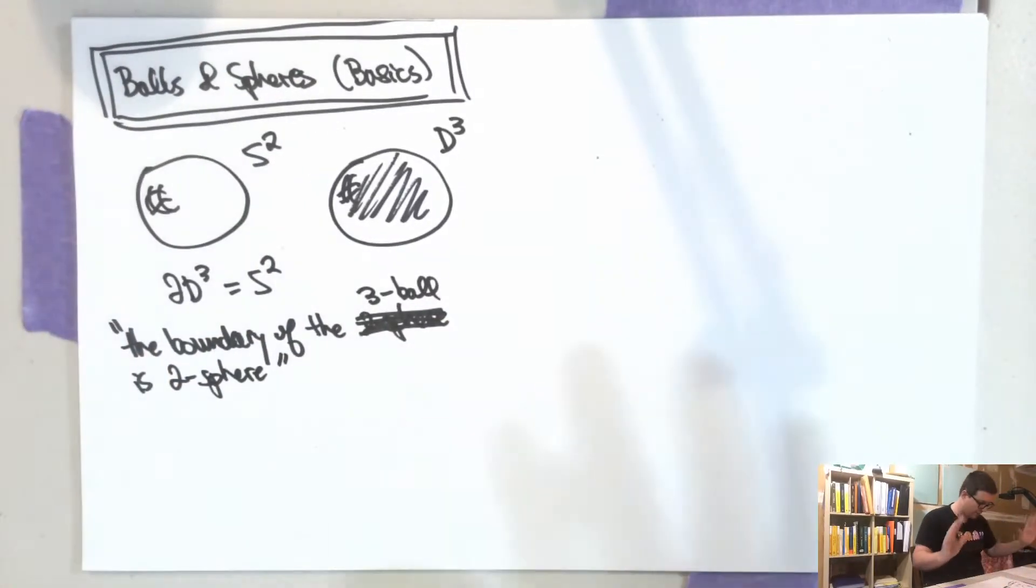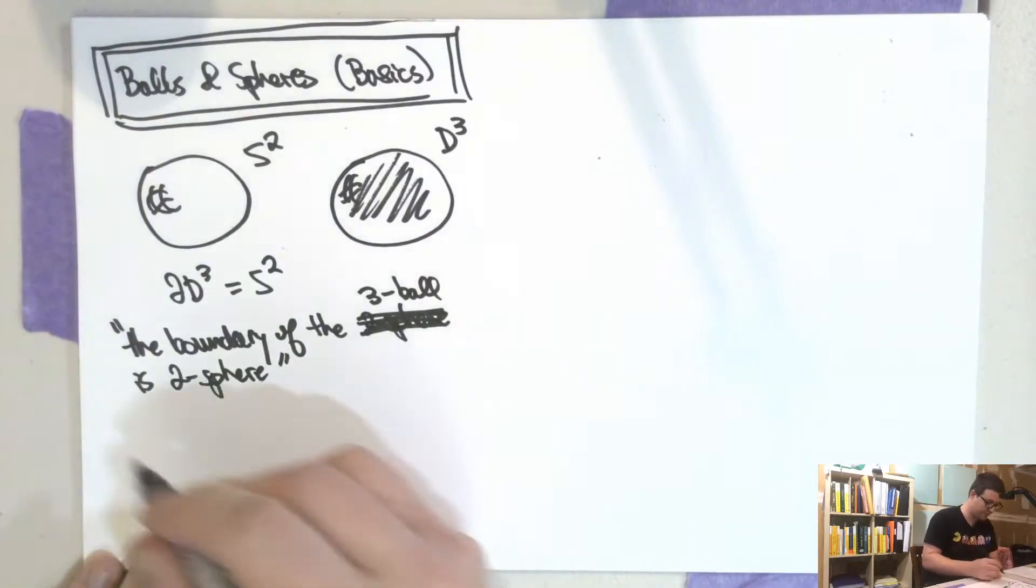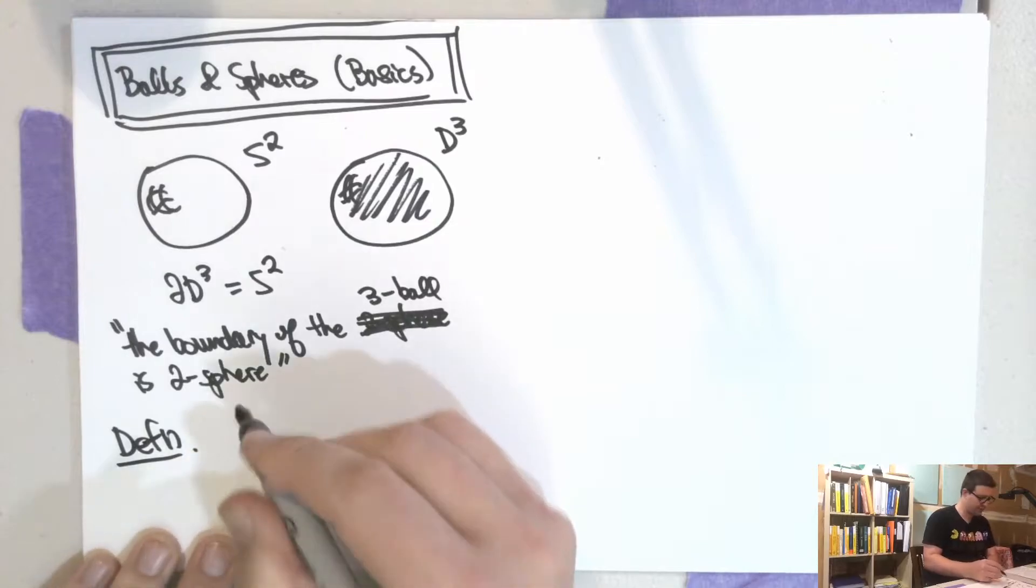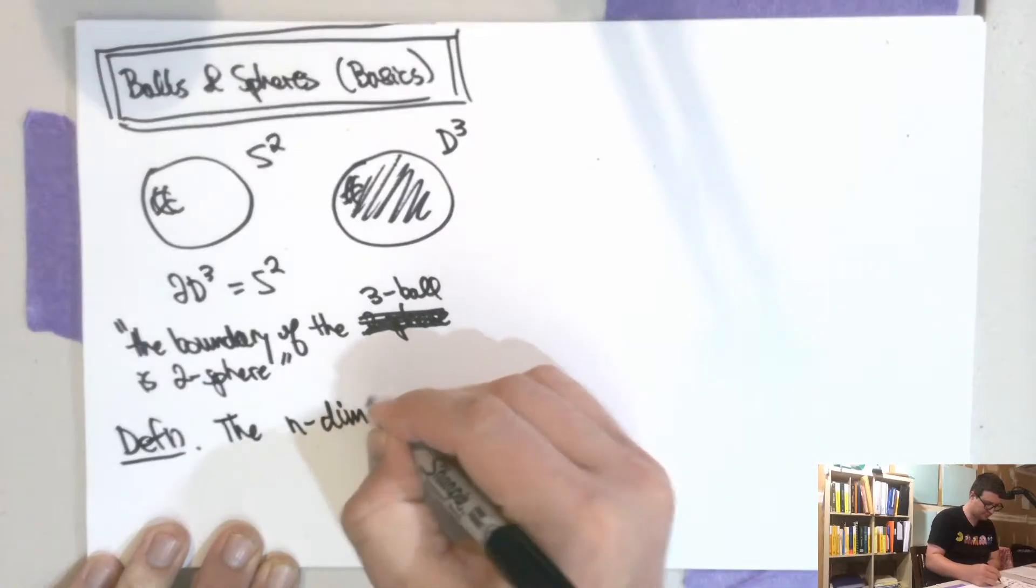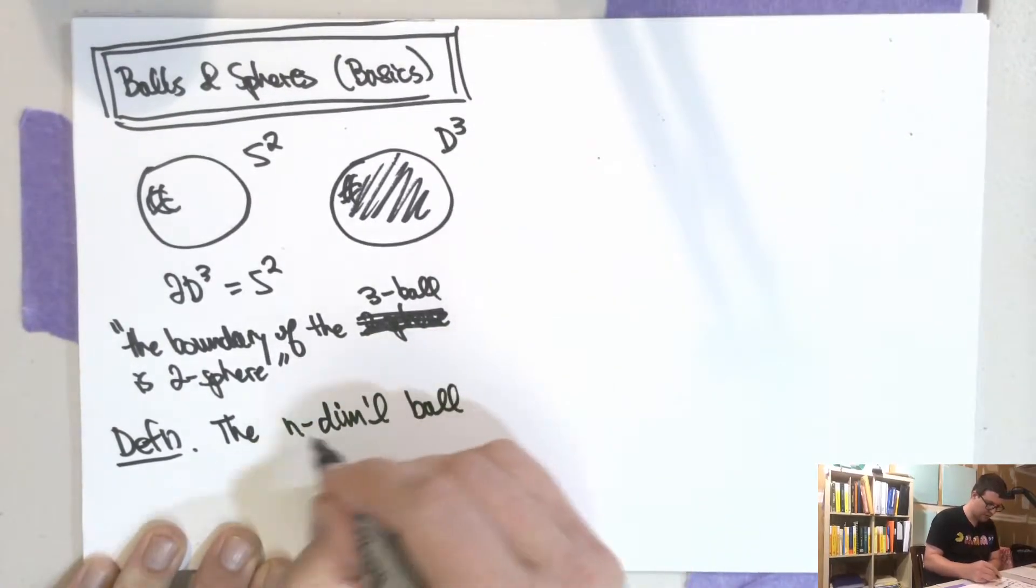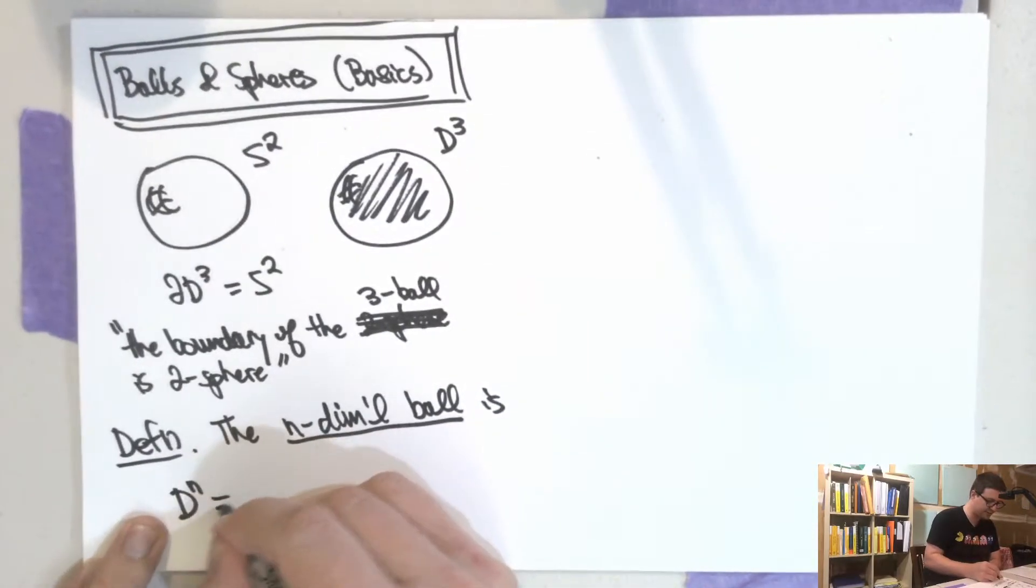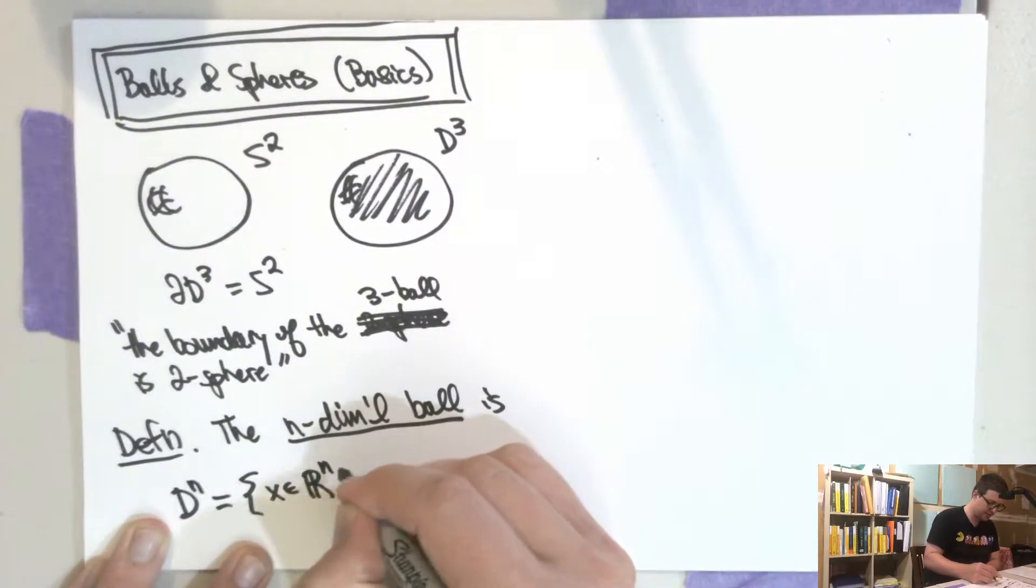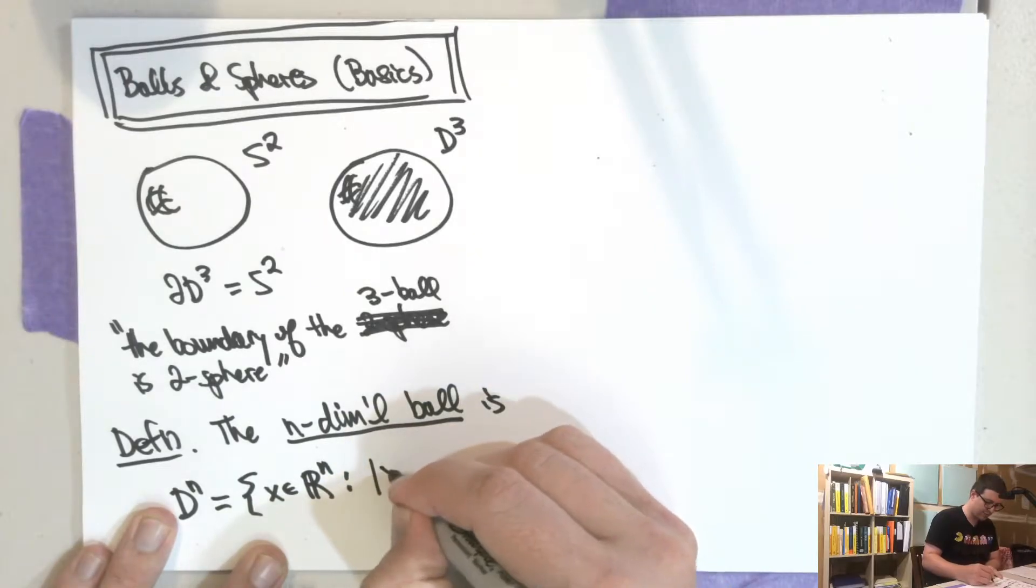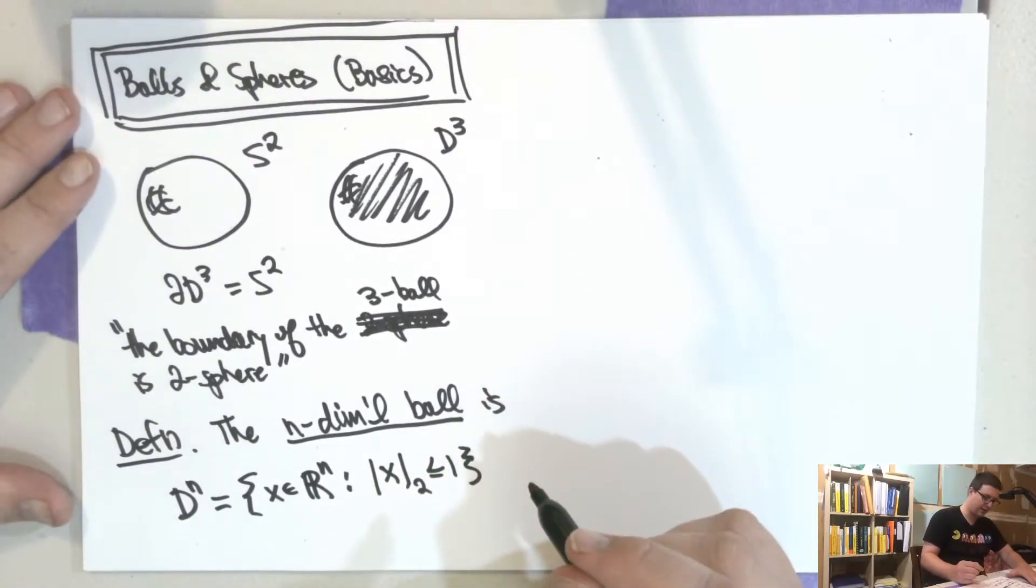So let me give you the definitions. So the n-dimensional ball is the set here, the topological space with the subspace topology of x in ℝⁿ, such that the norm of x is less than or equal to one. So this is the closed ball.